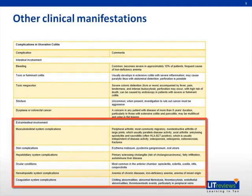There are several extraintestinal conditions associated with ulcerative colitis as well. Arthritis, ankylosing spondylitis, erythema nodosum, primary sclerosing cholangitis, and uveitis are commonly associated conditions that should be considered when evaluating patients with ulcerative colitis.